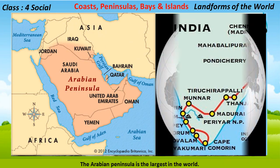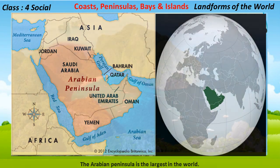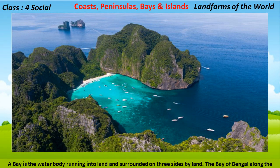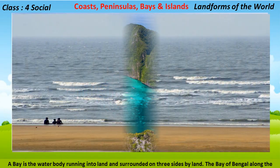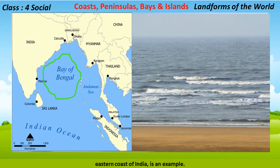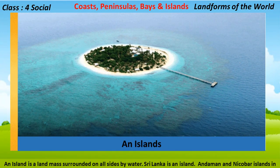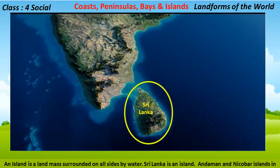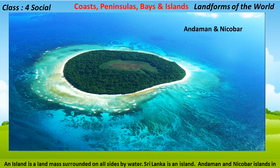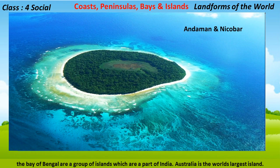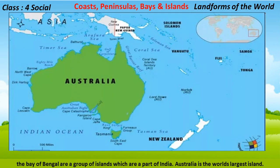The Arabian Peninsula is the largest in the world. A bay is a water body running into land and surrounded on three sides by land. The Bay of Bengal along the eastern coast of India is an example. An island is a land mass surrounded on all sides by water. Sri Lanka is an island. The Andaman and Nicobar Islands in the Bay of Bengal are a group of islands that are a part of India. Australia is the world's largest island.